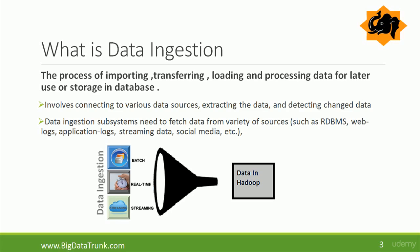In data ingestion there can be many varieties of sources like batch, real-time, or streaming data. Batch data is data from various source systems that are typically available as files, for example text files, binary files, or image files. Real-time data is not about storing and accumulating the data and transferring it later; rather it deals with moving data into big data systems as and when they arrive.